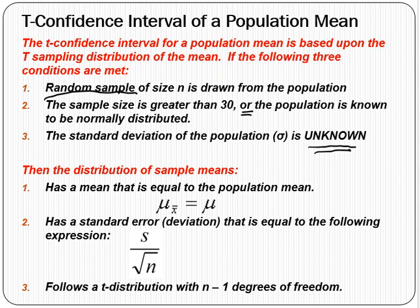If those three conditions are true, then the distribution of the sample means — the sampling distribution — has a mean equal to the population mean and a standard error equal to s over the square root of n, where s is the standard deviation of the sample. Recall that for the z-interval, that standard deviation is sigma over the square root of n, but since we don't know sigma, we replace it with s, the sample standard deviation.